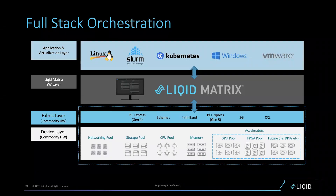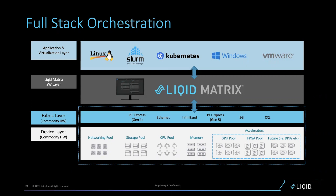Liquid focuses on three primary technology areas with a vision to deliver the fully dynamic data center. Today the primary use case is GPUs, but our vision is to be multi-fabric — whether disaggregating over PCIe Gen 4, PCIe Gen 5, Ethernet, InfiniBand, or soon CXL. Liquid is a multi-fabric orchestration layer across all physical interfaces, with different devices on different interfaces suited to different jobs.